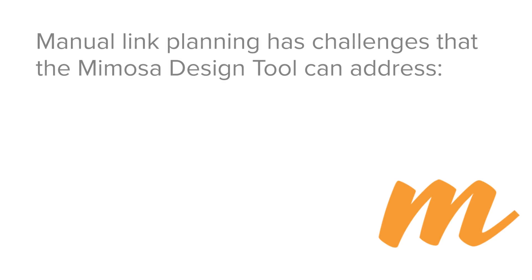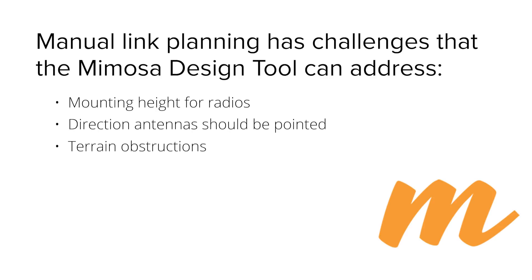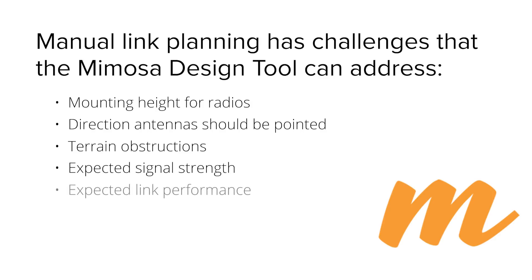When designing point-to-point links and point-to-multipoint networks, using Google Earth to do manual design can be a little difficult. You don't know how high to mount the radios, you're not exactly sure which way to point the antennas, and you don't know for sure if there's terrain in the way. You especially don't know what the expected signal strength will be, what kind of performance to expect from the link, whether to worry about rain fade, or how many subscribers you can cover.